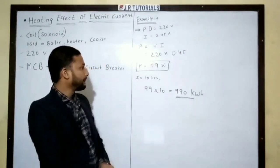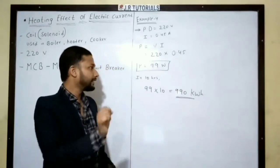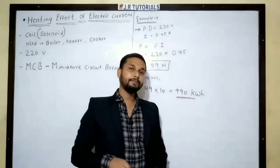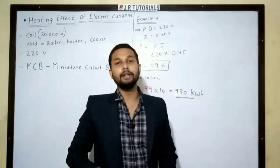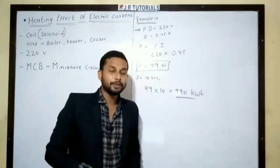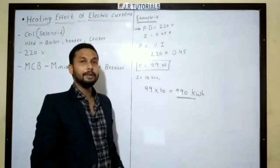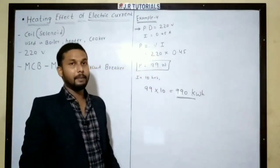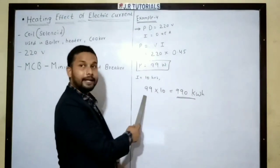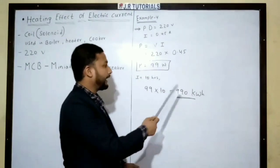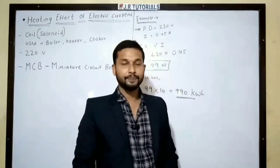99 watts. Now, if we have 10 hours of continuous operation, then we have power consumption. We multiply by 10 times — 99 multiplied by 10 — and we get 990 watt-hours. Okay, so let's move ahead.